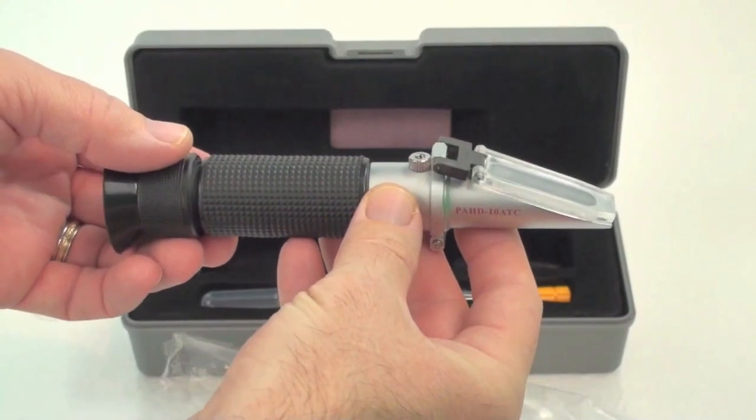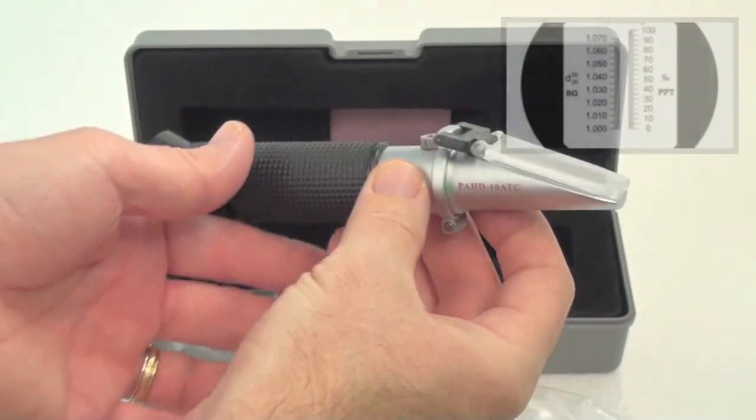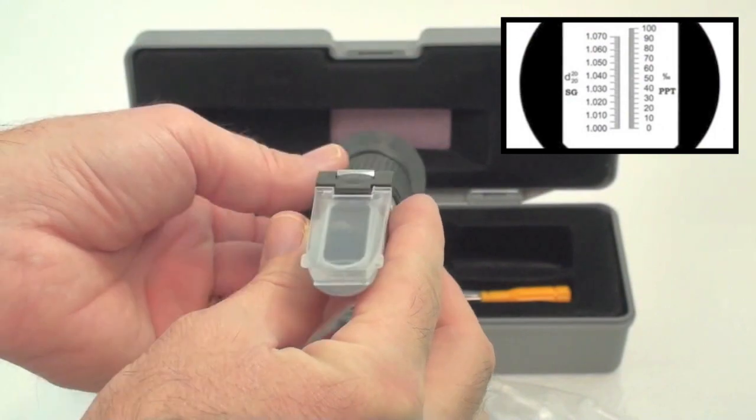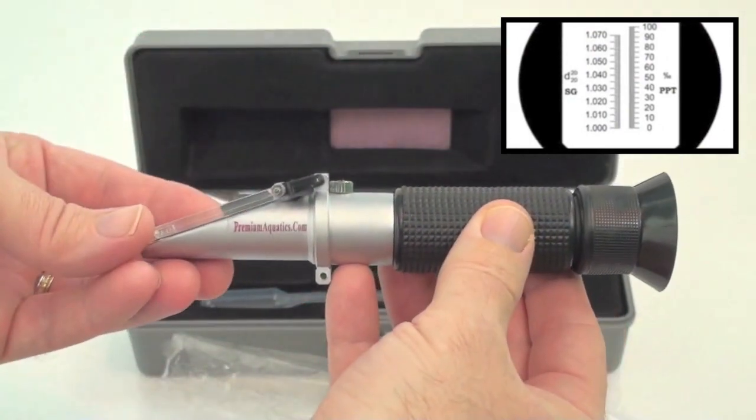Salinity levels can be checked within the range of 0 to 100 parts per thousand. The scale is marked at parts per thousand divisions and measurements are accurate to plus or minus one parts per thousand.